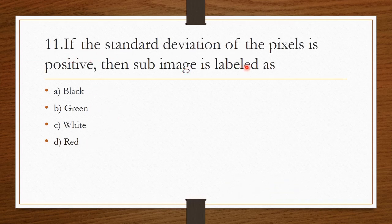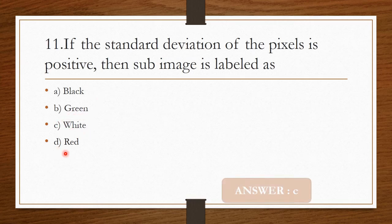Question 10: If the standard deviation of the pixels is positive, then the sub-image is labeled as — Option A: Black. Option B: Green. Option C: White. Option D: Red. The correct answer is Option C — White.